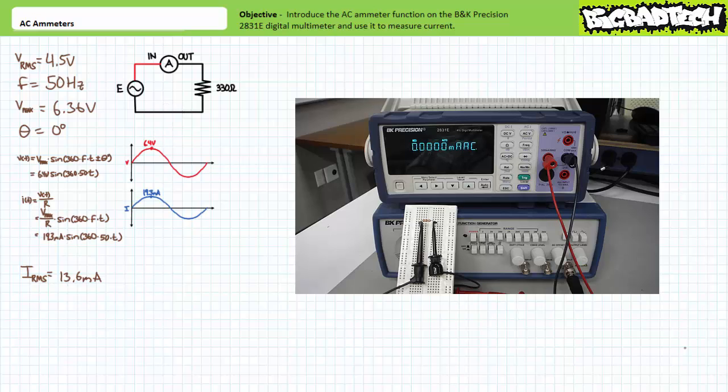Note the BK Precision 2831 DMM is auto-ranging so we don't need to worry about manually ranging it prior to measuring current. If you wish you can force it out of auto-range mode into manual but we'll keep it as is. Our AC ammeter is now ready for business.